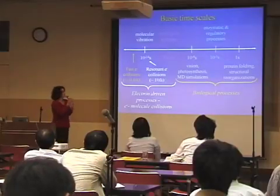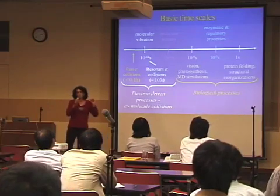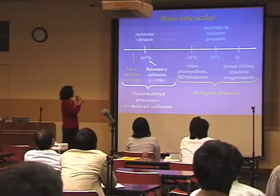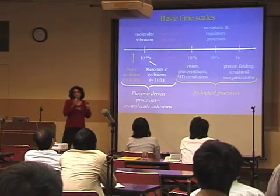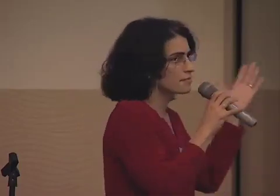Before I get into the talk itself, I'd like to tell you a little bit about the basic timescales involved in these processes. If we talk about electron-driven processes first, we imagine those processes as collisions of low-energy electrons with a target molecule. We can divide those into two categories: fast electron collisions, which take place in about a tenth of a femtosecond, and slow electron collisions, which are commensurate with the period of molecular vibration, taking approximately ten of those units to occur.